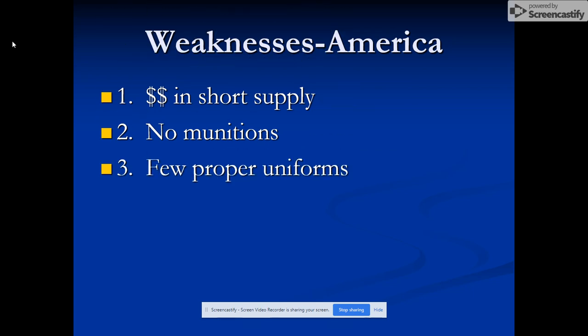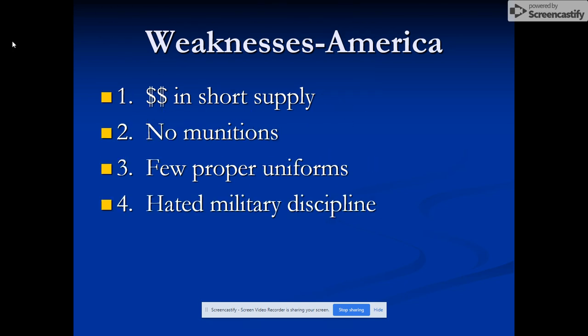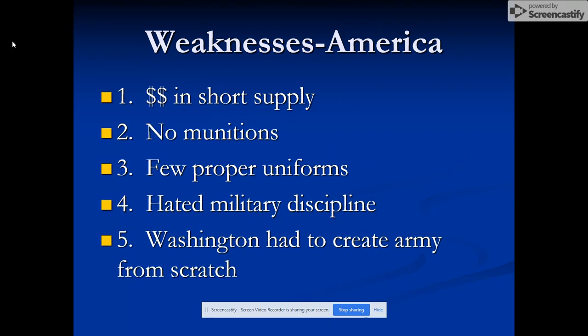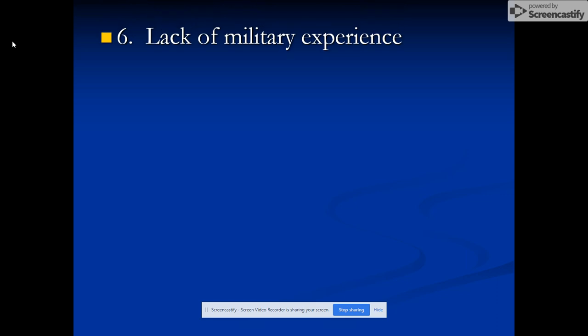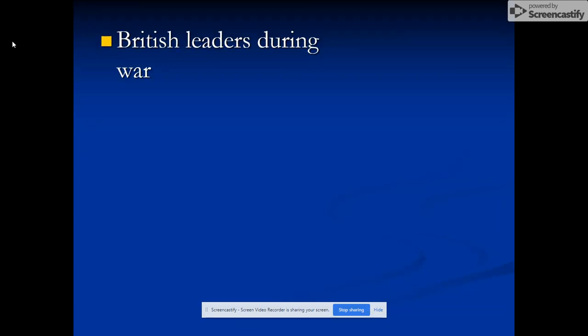There were few proper uniforms for the colonial armies. They hated military discipline, and Washington had to basically create the army from scratch. Another weakness was lack of military experience — we talked about the French-Indian War. Colonial soldiers were hated by the British soldiers, didn't have a lot of military experience, and were inefficient and corrupt. Those were major problems with the American armies.